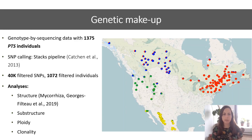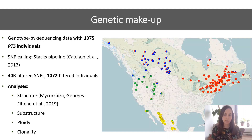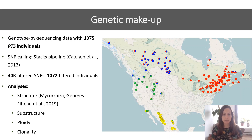We used genotype sequencing data with 1,375 individuals, and after SNP calling and filtering, I obtained around 40,000 SNPs and 1,072 filtered individuals. I tested for population structure and identified four major clusters: one in the Northeast North America, one in Northwest North America, a Western US cluster, and a fully novel Mexican cluster that has not been studied before. The Western US cluster is congruent with what was found by previous studies. Previous studies also identified one Northern cluster instead of two, but they had lower sample sizes, which could explain why.